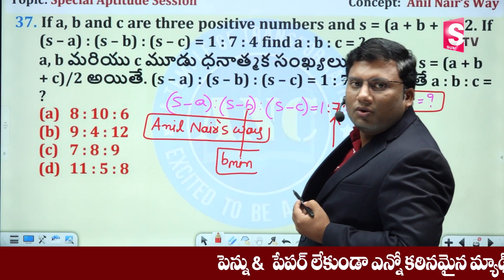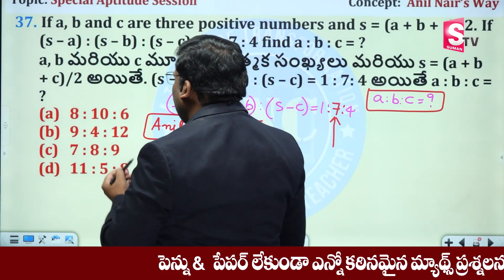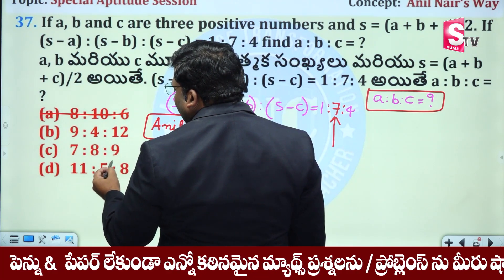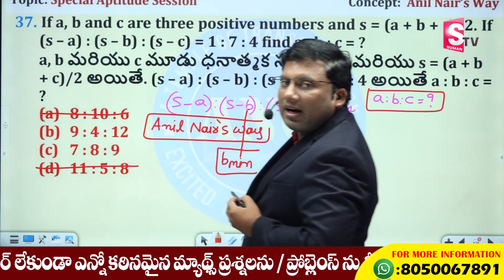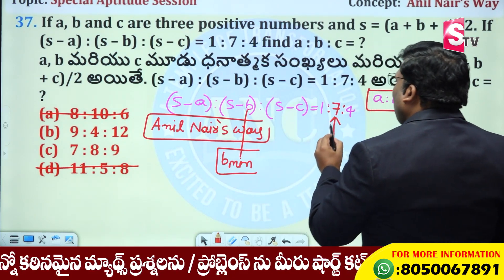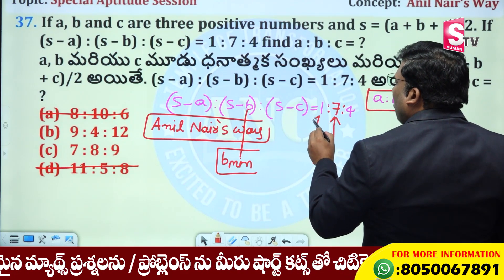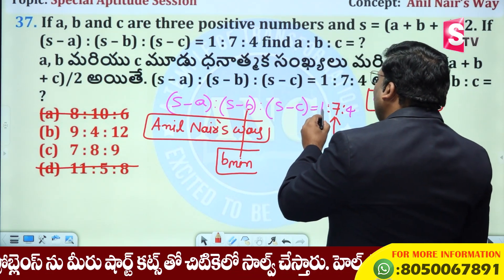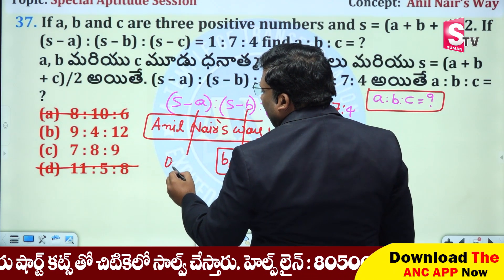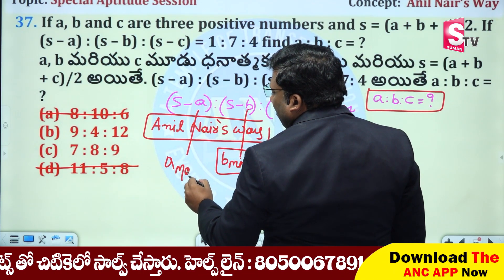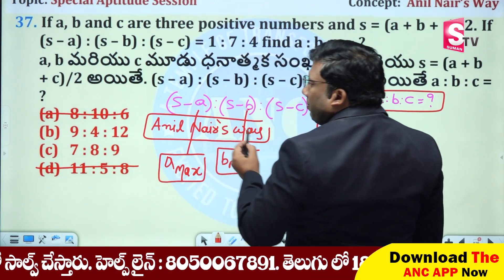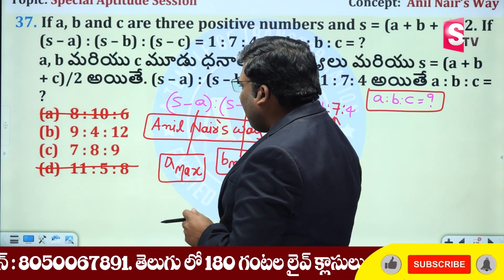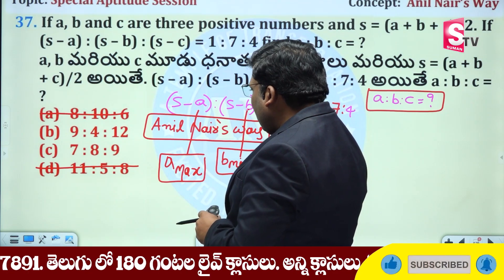Answer: B value is minimum. B value minimum options — 6, 80, 10. Not this one. 7, 10, 5, 80 — this is B minimum. 1 : 7 : 4. 1 : 7 : 4. S minus a is 1, so 1 is minimum, meaning A is maximum. A is maximum, B is minimum.